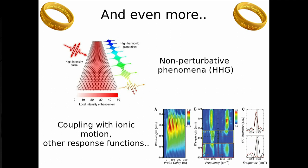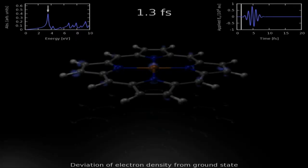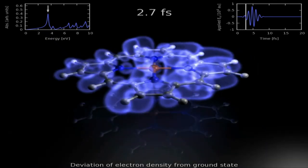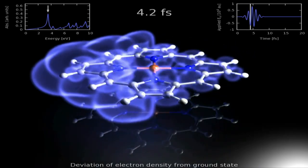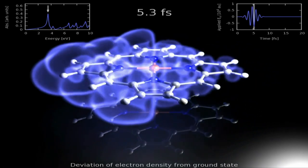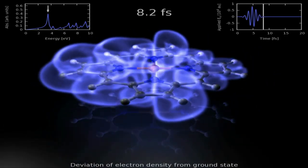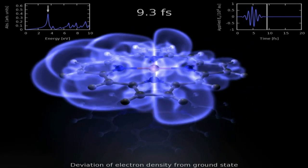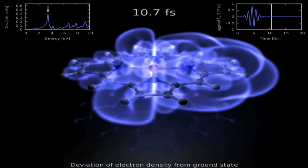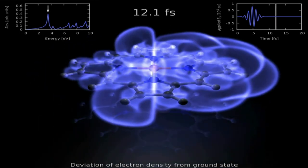Let me show you an example of a real-time simulation taken from YouTube to give you an idea. This shows the absorption of a laser with a frequency exactly resonant with an atomic transition, and you can see the electron density oscillating as the atom is excited by the laser field. We can do the same in solids.